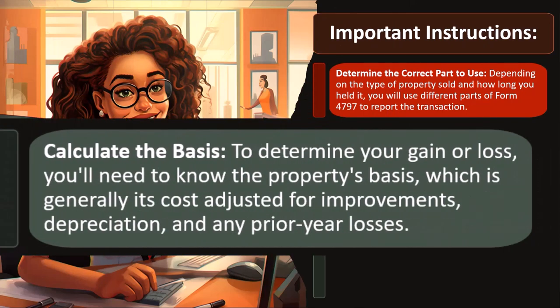Calculate the basis. The basis is kind of like the cost of the property, but it could be a little bit different than the cost, because you might have done something to the property which could have altered the basis. In essence, the cost of the property — when you sell property, how much did you buy it for? How much did you sell it for? Most equipment you would think you would sell at a loss, because you bought it and then sold it at a price that's less than what you bought it for.